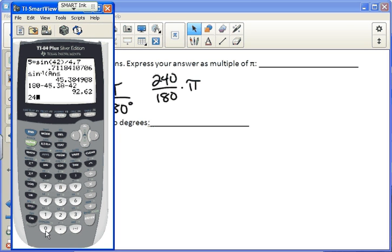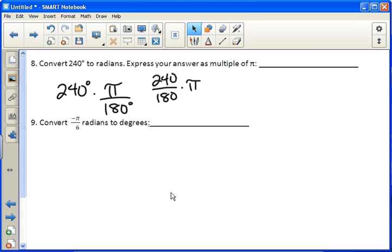Turn that into a fraction that's reduced. I believe it's going to be 4 thirds. And we get 4 pi over 3 is our answer. 4 pi over 3.